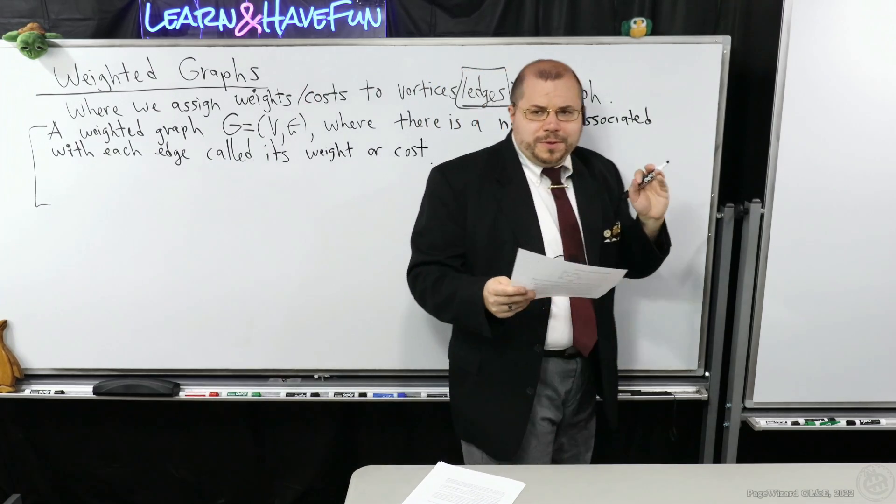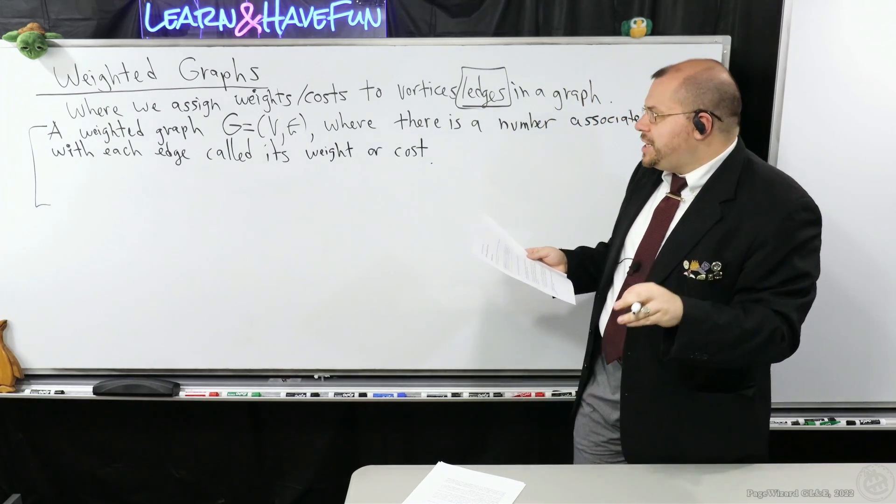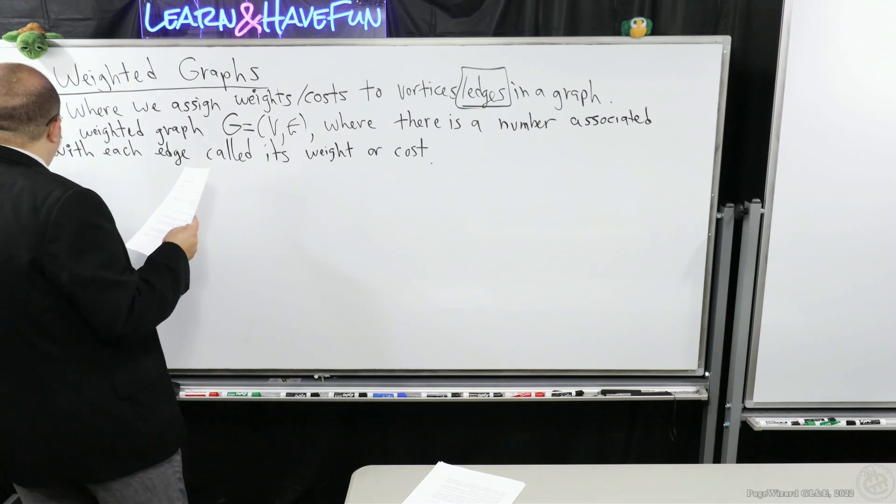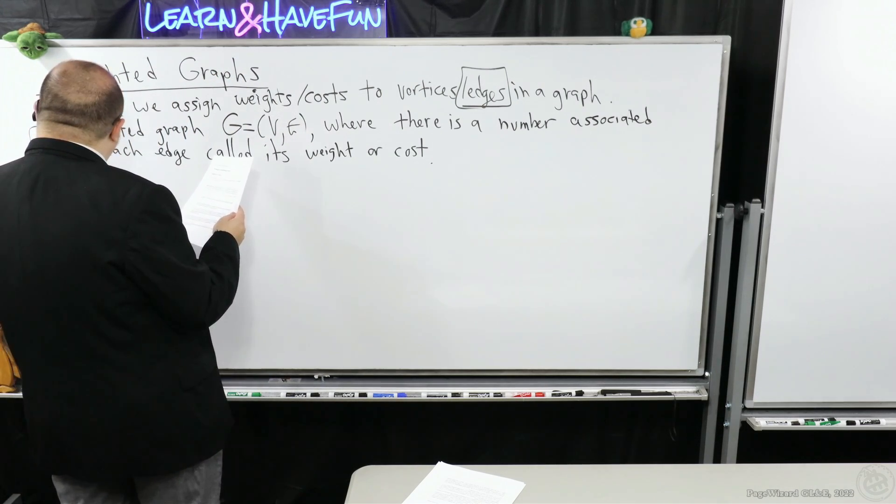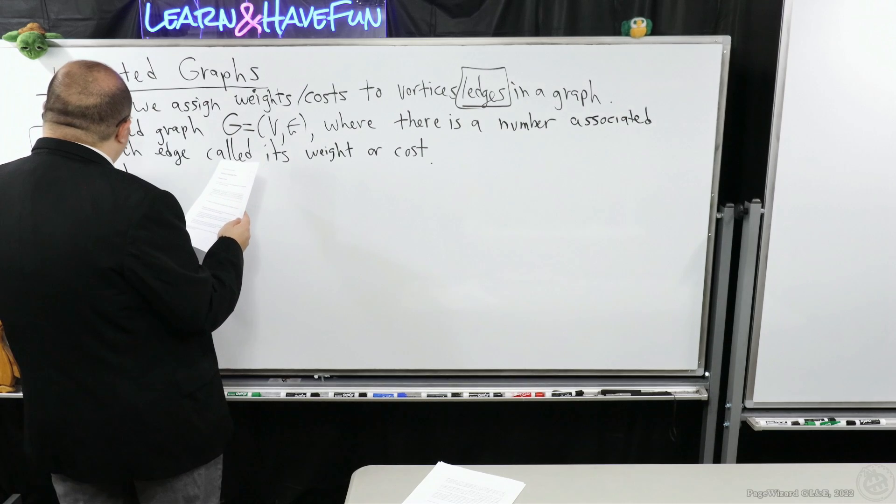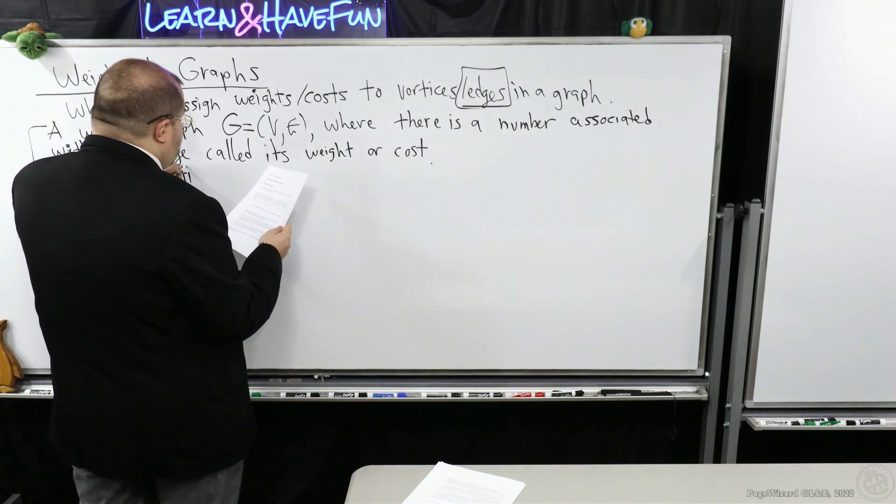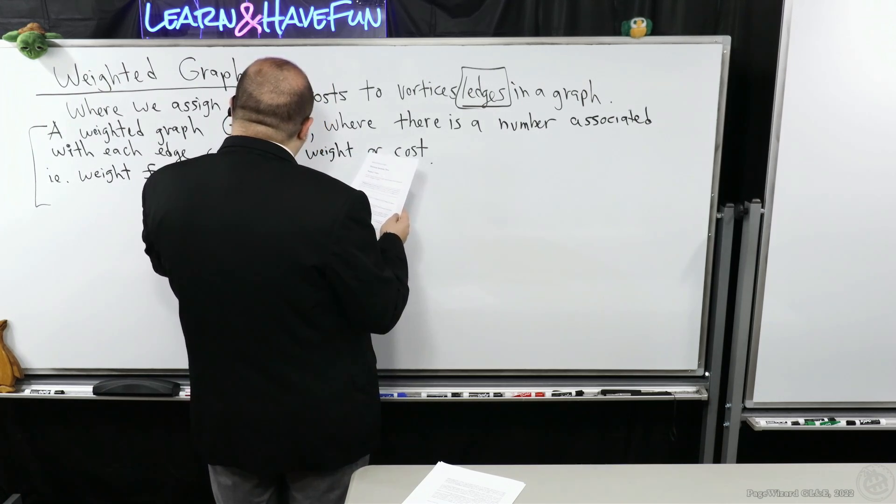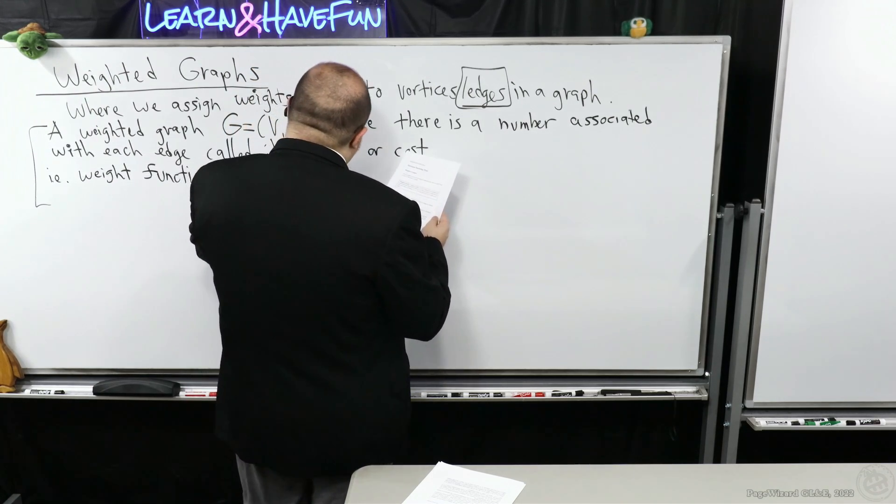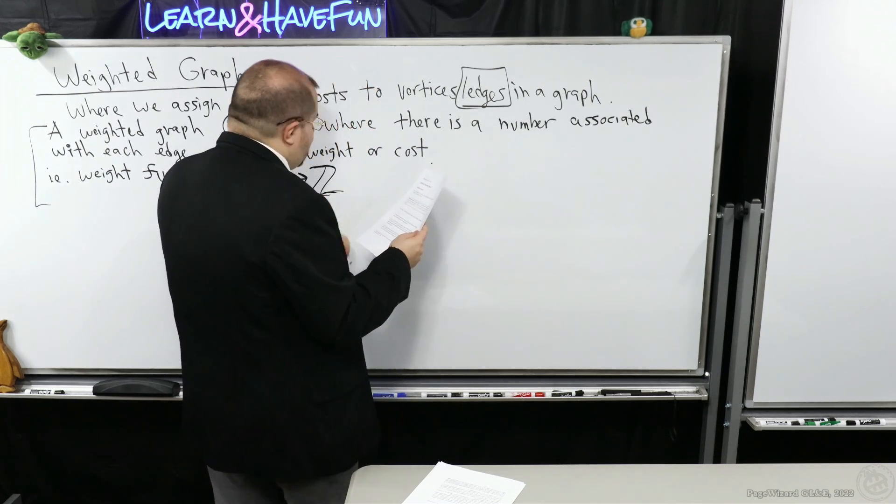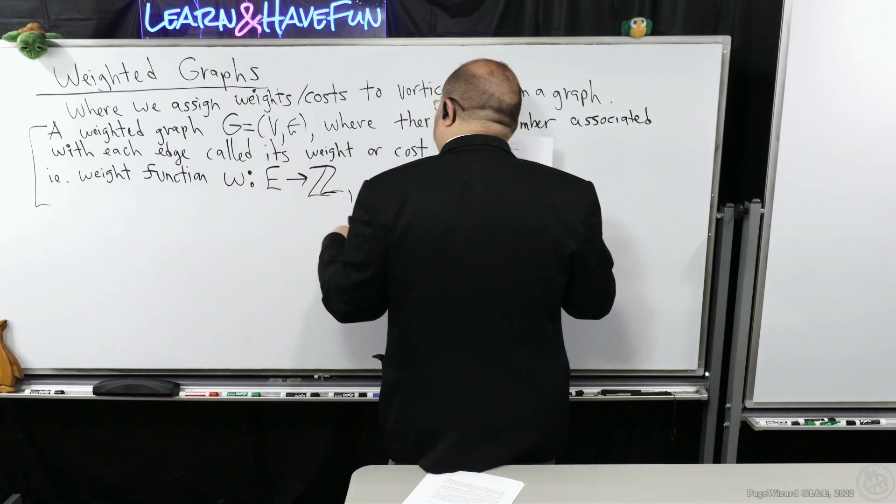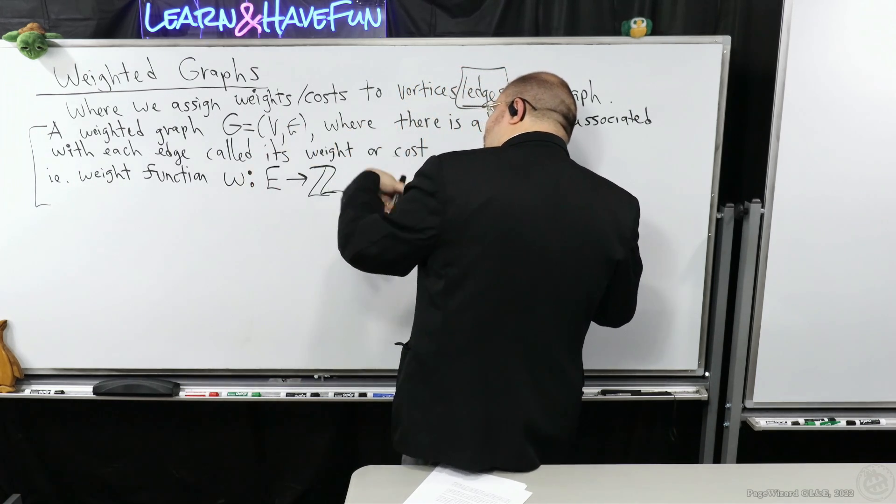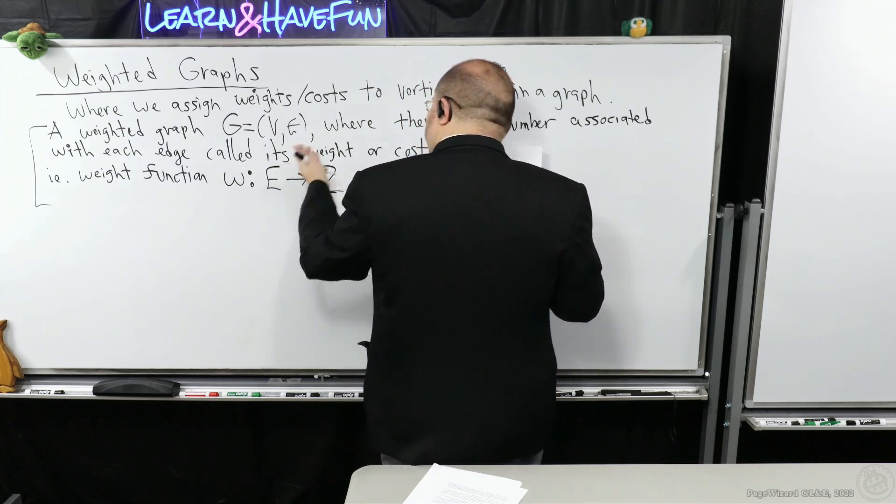Specifically for those that are a little bit more enthused on a more precise definition, we're going to have what we call a weight function or cost function. There's going to be a weight function w, which is going to take in an edge as input, and it's going to spit out an integer. For our discussion, I'm just going to make it an integer.